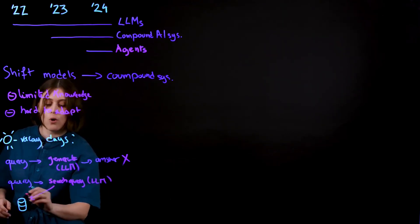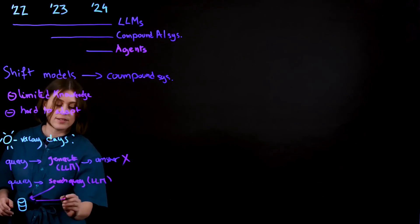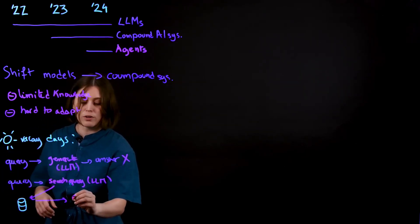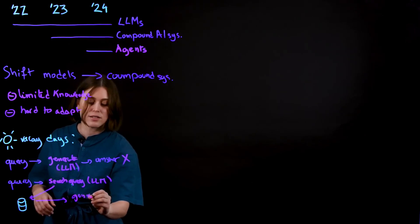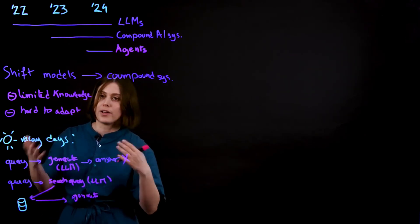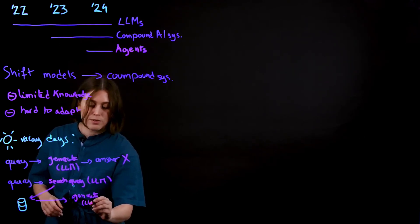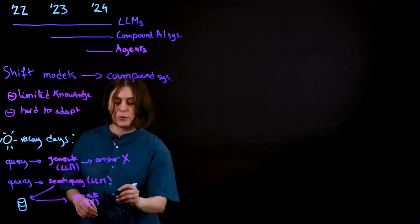That would go and fetch the information from the database, output an answer, and then that would go back into the model that can generate a sentence to answer, 'Maya, you have 10 days left in your vacation database.' So the answer that I would get here would be correct.